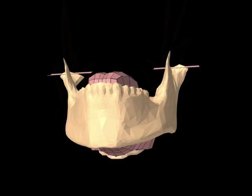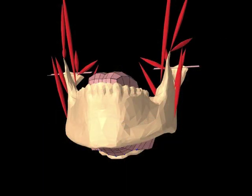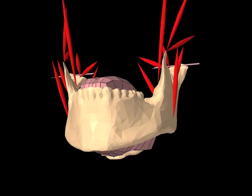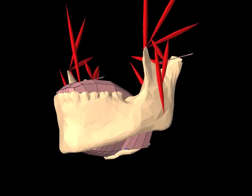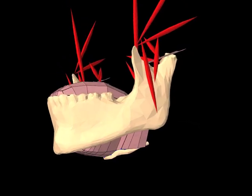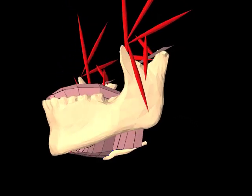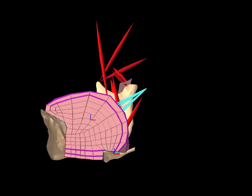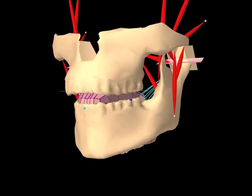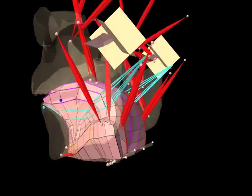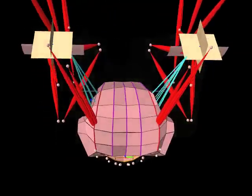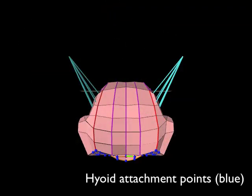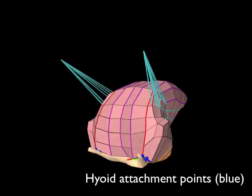The model includes point-to-point, hill-type models of the jaw muscles, as well as extrinsic and intrinsic tongue muscles embedded within the FEM mesh. FEM nodes of the tongue are attached to anatomical landmarks on the hyoid and jaw.